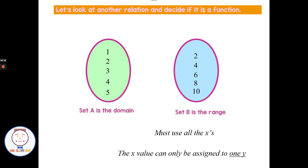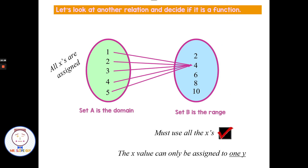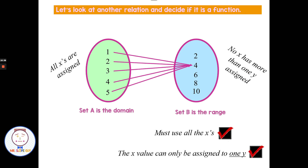How about mapping with 1 to 4, 2 to 4, 3 to 4, 4 to 4, 5 to 4? All the x's used? Yes. Are any of them used more than once? No. So that is a function — all the x's are assigned and no x has more than one y assigned to it.